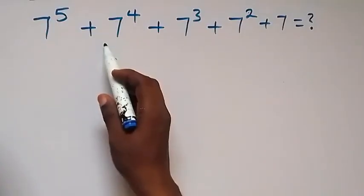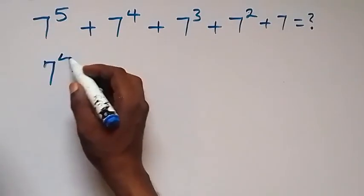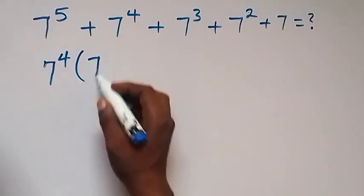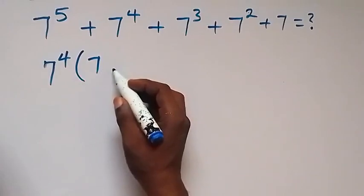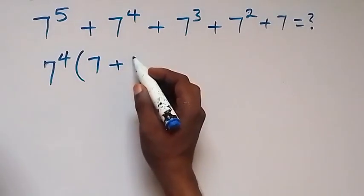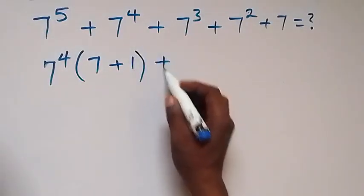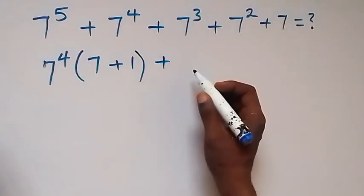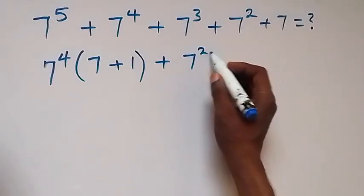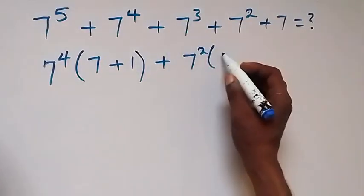In these two numbers, let's factor 7 raised to power 4 out. Then this will mean 7 raised to power 1, that's 7, then plus 1 left here. Then in these two numbers as well, let's factor 7 squared out — then we have 7 squared out, and what is left here is 7.